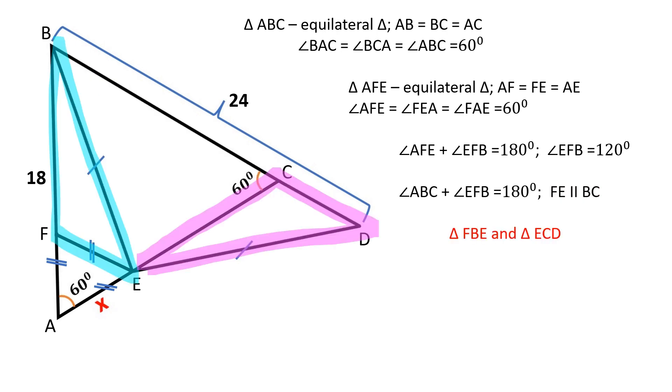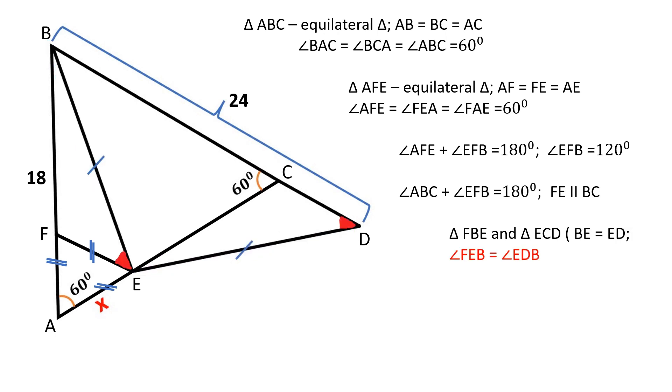Let's review triangles FBE and ECD. BE is equal to ED. Angle FEB is equal to angle EDB because these two angles are congruent as the base angles of an isosceles triangle, and these two angles are congruent as corresponding angles.